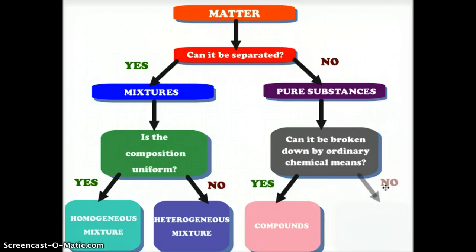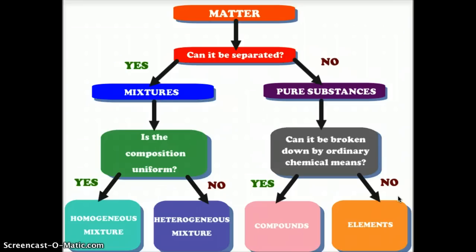However, if the answer is no, that it cannot be separated, then we are dealing with an element. An element means that it has the same atoms throughout its entire consistency, and that gives us the elements of the periodic table: oxygen, carbon, nitrogen, and so on.